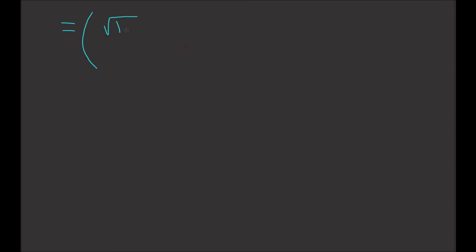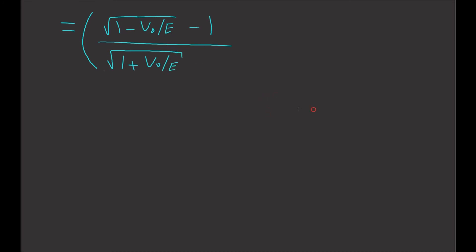Simplifying a little further, we can write this as the square root of (1 plus V0 over E) minus 1, divided by the square root of (1 plus V0 over E) plus 1, all squared.